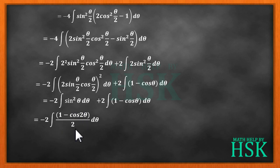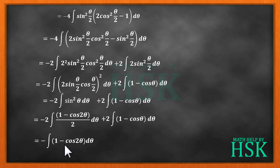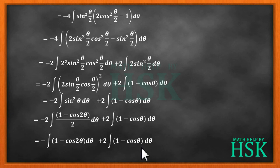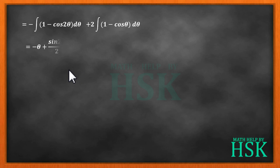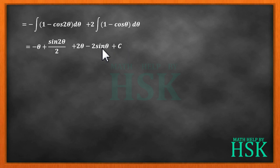Further I write sin²θ as (1 minus cos 2θ)/2, and the remaining term as it is. The 2's cancel out to give minus 1 times integration of (1 minus cos 2θ) dθ plus 2 times integration of (1 minus cos θ) dθ. Now I can perform the integration: integral of 1 is θ, integral of cos 2θ is sin 2θ/2, and integral of cos θ is sin θ. Multiplying with the minus sign outside gives minus θ plus sin 2θ/2, and plus 2θ minus 2 sin θ plus C.